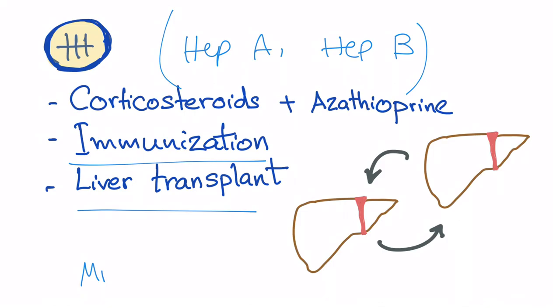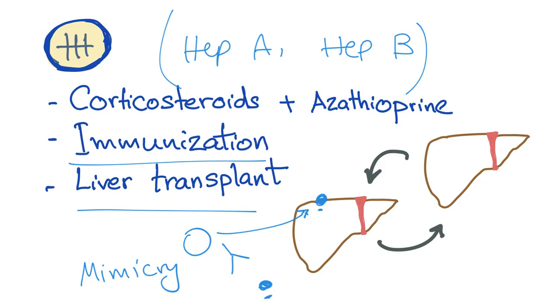The last resort is of course liver transplant. The immunological mechanism is probably due to molecular mimicry: the antigen in the liver is similar to another antigen that the immune cells recognize, so they become confused and attack liver cells thinking they are the target antigen. That is molecular mimicry — and that concludes autoimmune hepatitis.